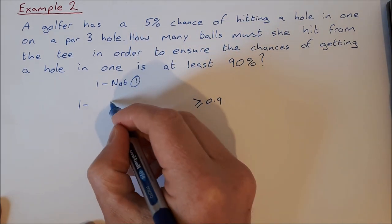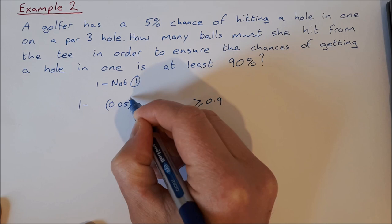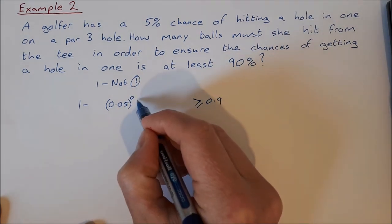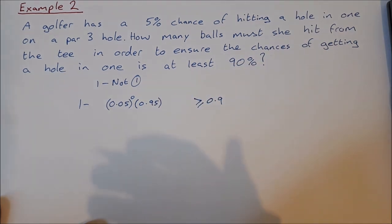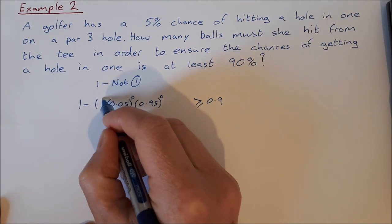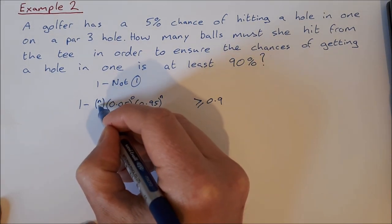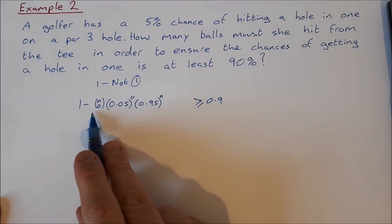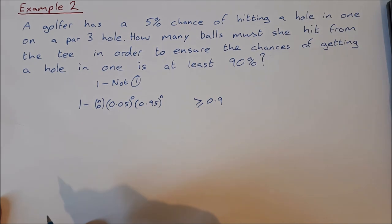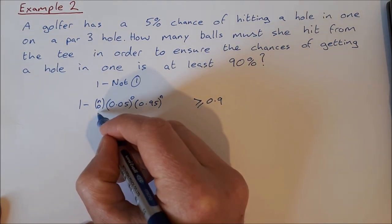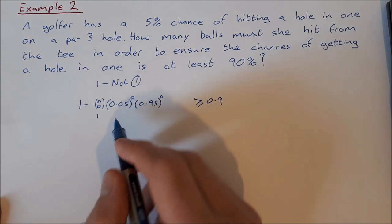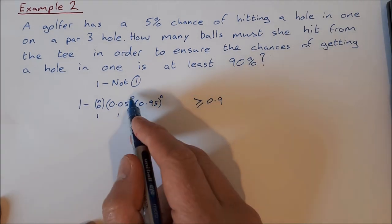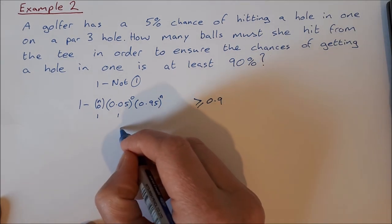P(not getting any hole-in-one) uses a 5% chance for the hole-in-one (0.05), so not getting one at all means 0.05 to the power of zero, and not getting a hole-in-one the rest of the time is 0.95 to the power of n. There's only one way this can happen, so n choose 0 equals 1, and 0.05 to the power of 0 is also 1. These both cancel out, leaving 1 minus 0.95 to the power of n.